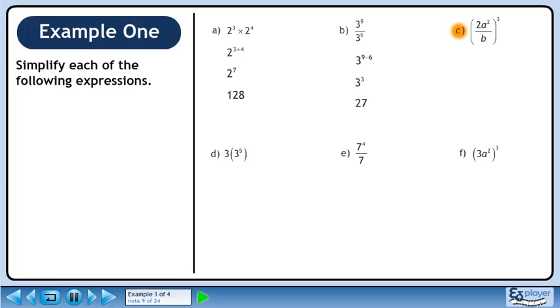Now we'll move on to part c. Both the 2 and the b can be written with an exponent of 1. Distribute the exponent of 3 to everything within the brackets. This evaluates to 8a to the power of 6 over b to the power of 3.